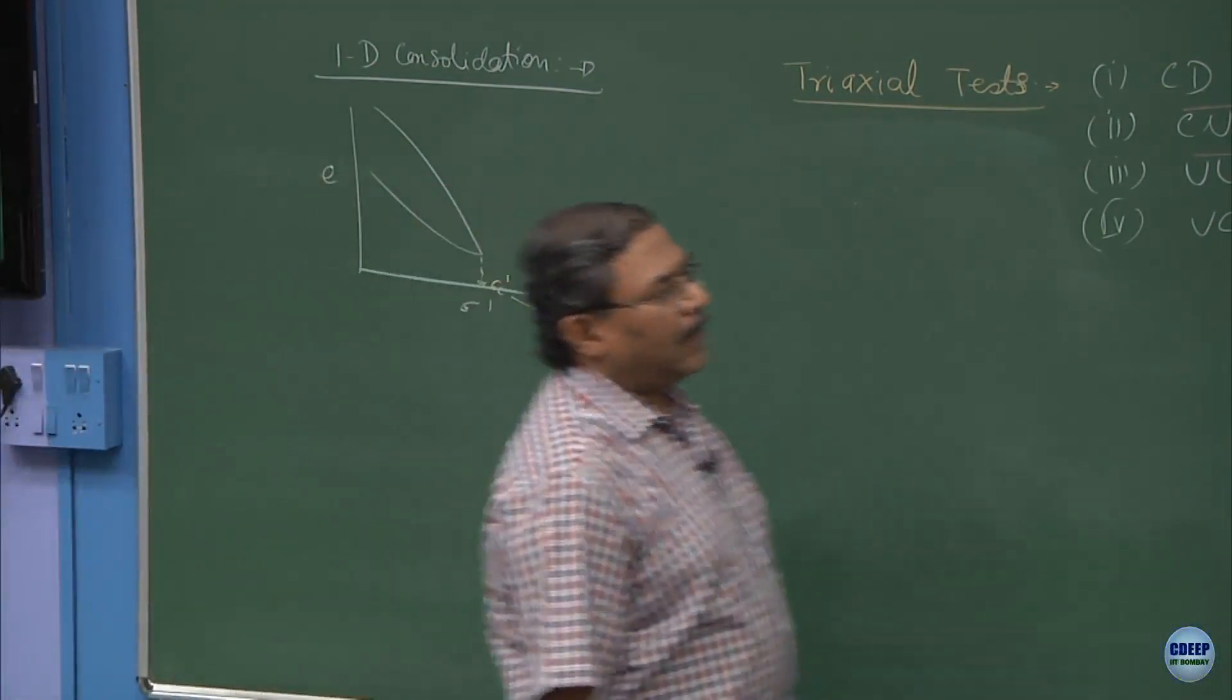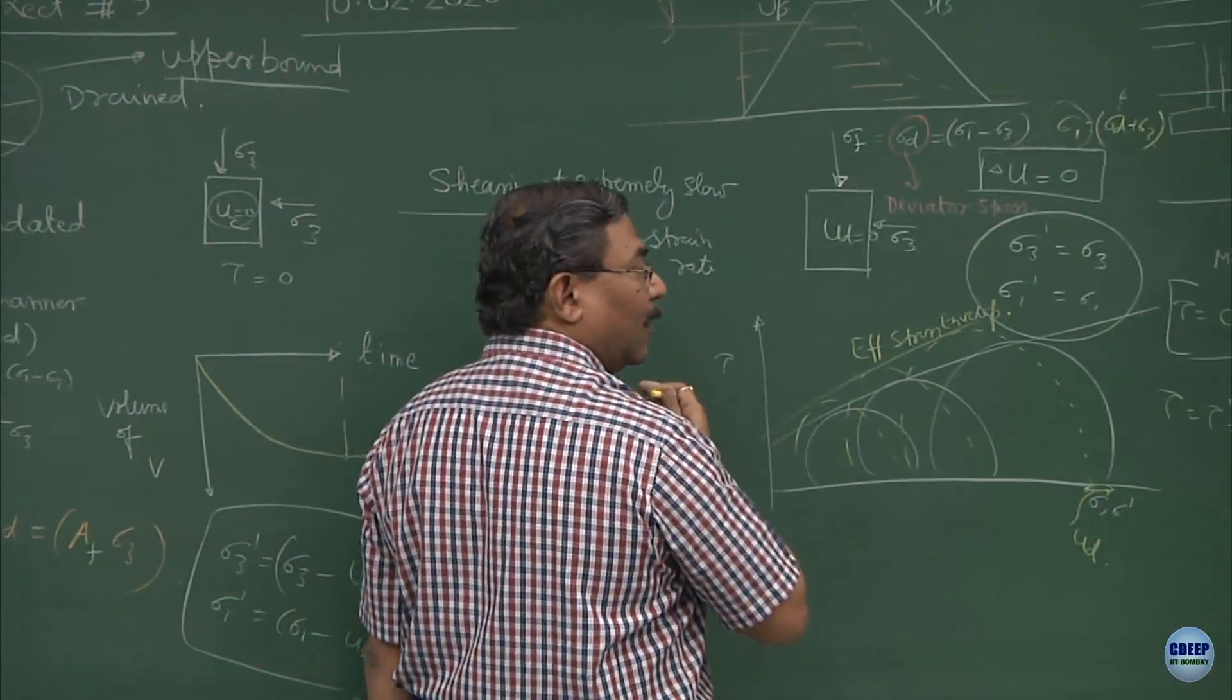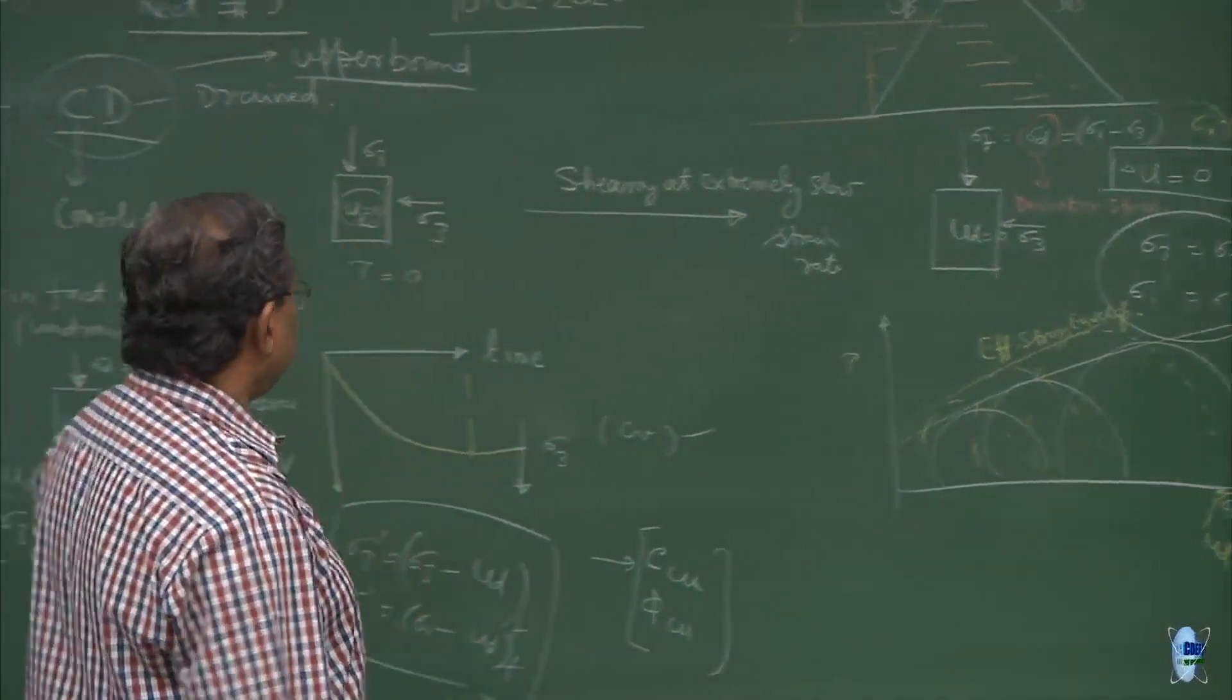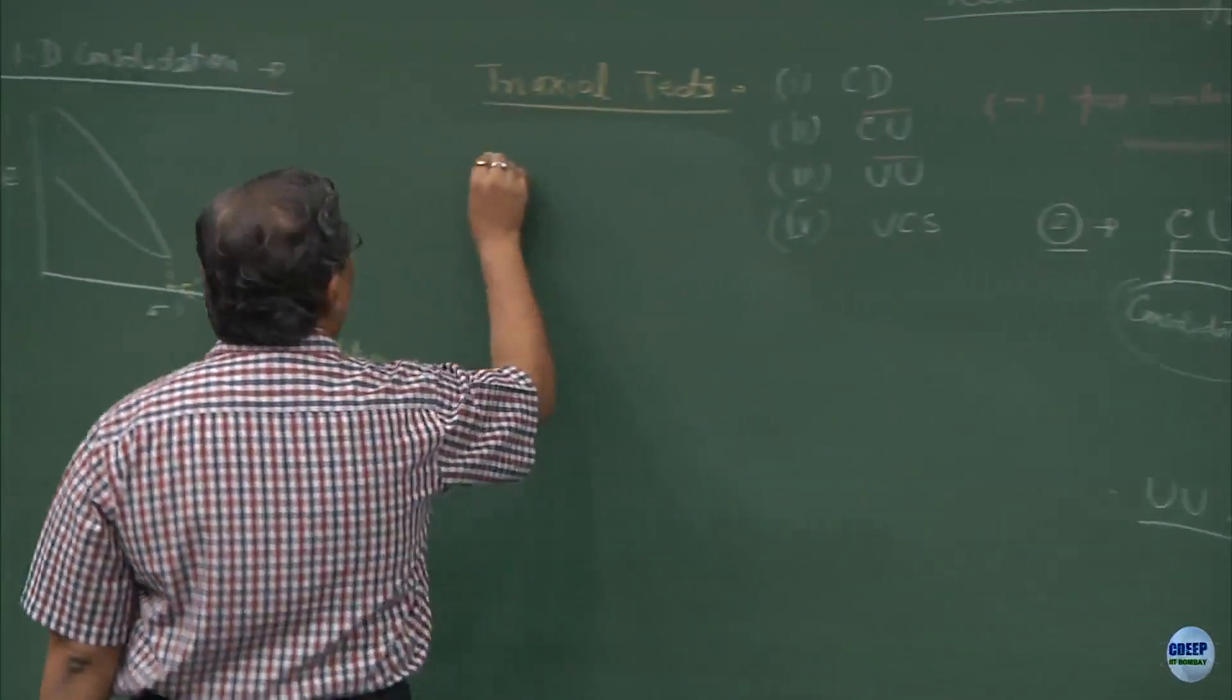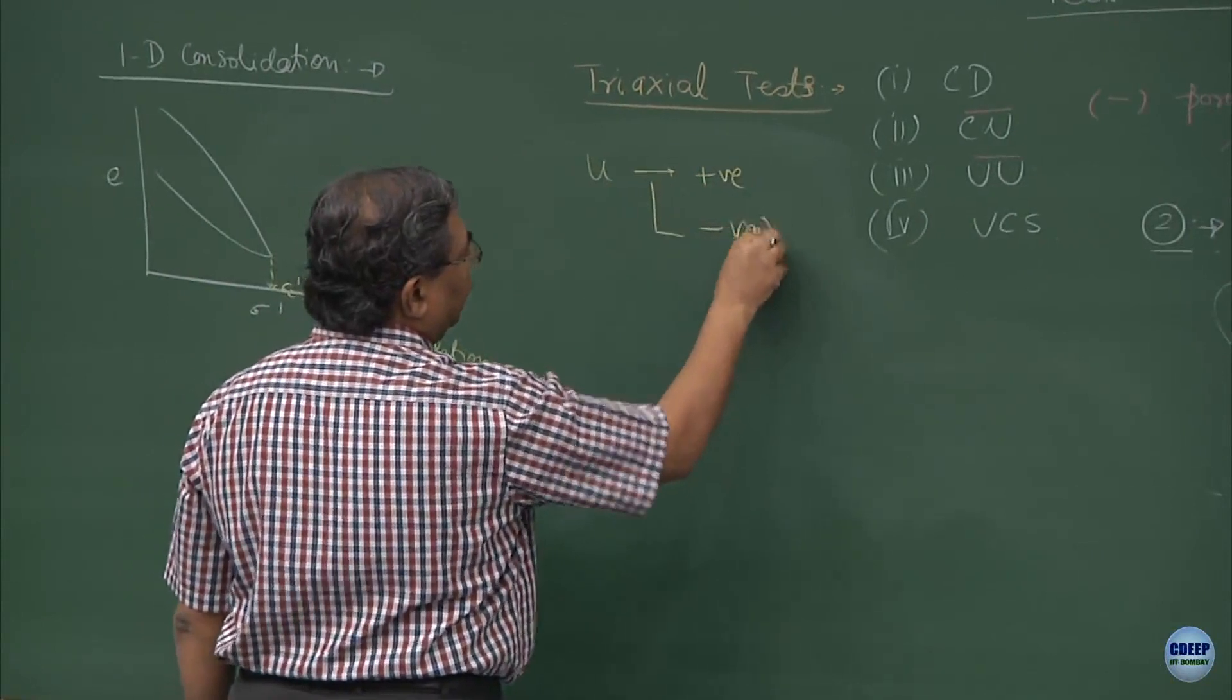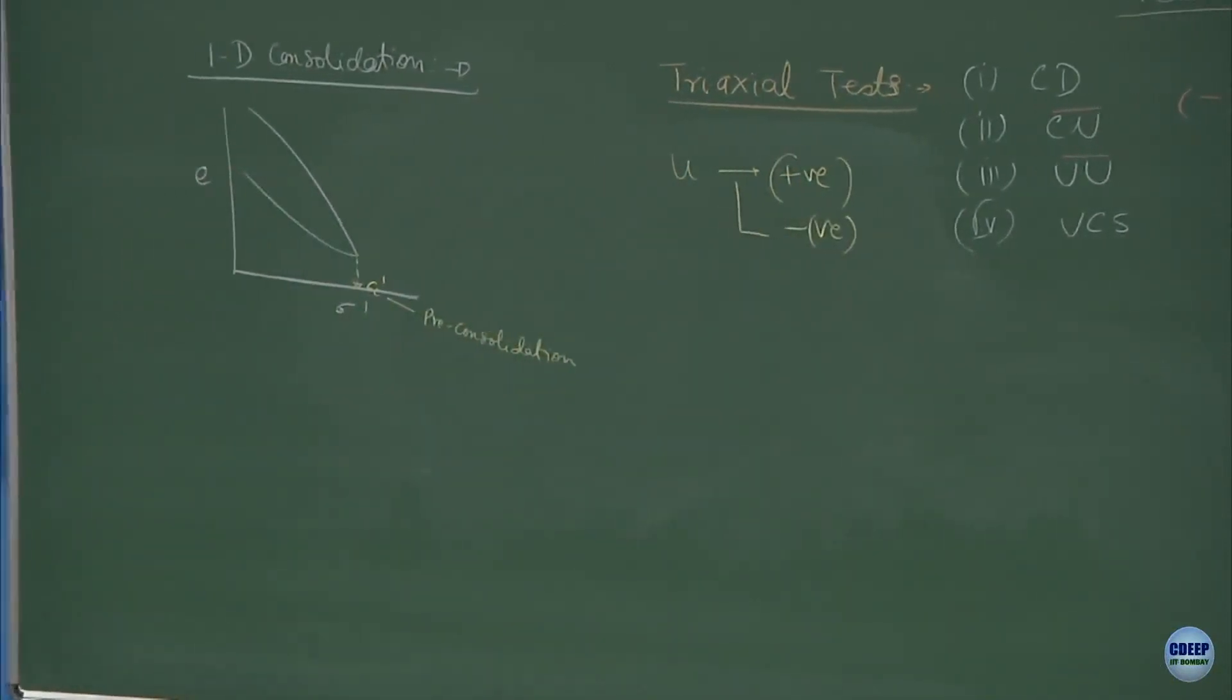Sometime back I was talking about that the Mohr circles may shift on the left hand side or they may get shifted on the right hand side also. That means the pore pressures could be either positive or they could be negative. The material is the same.